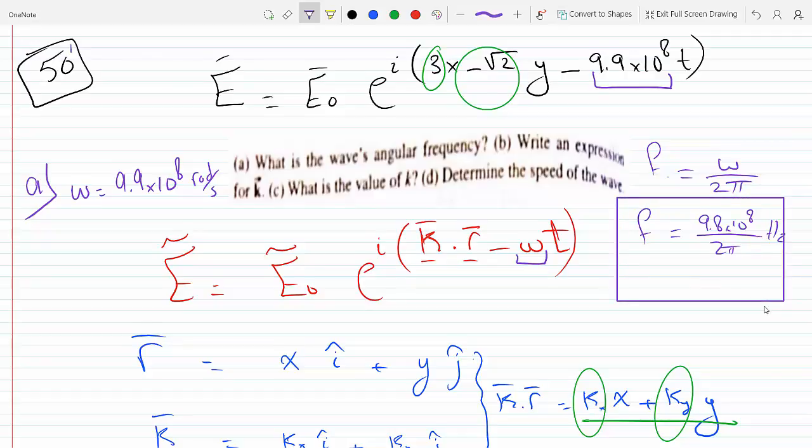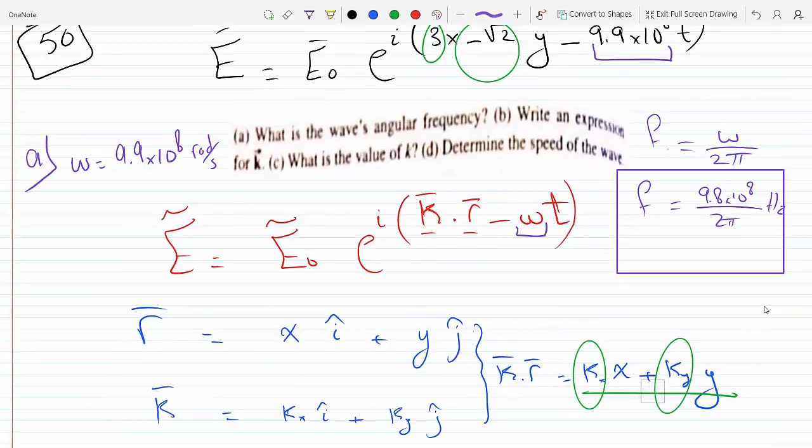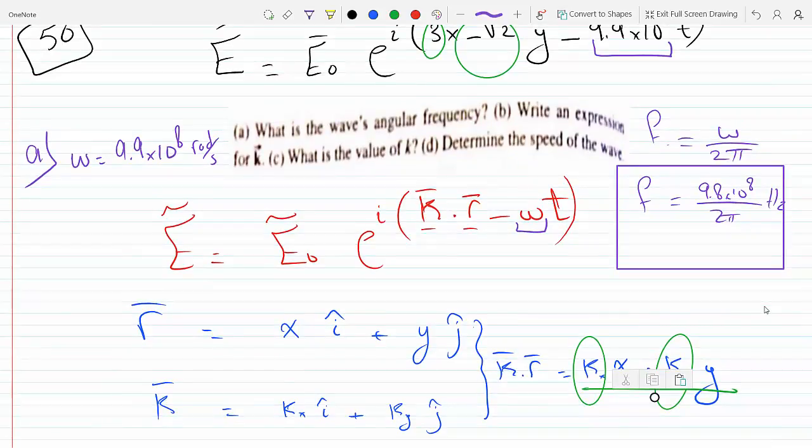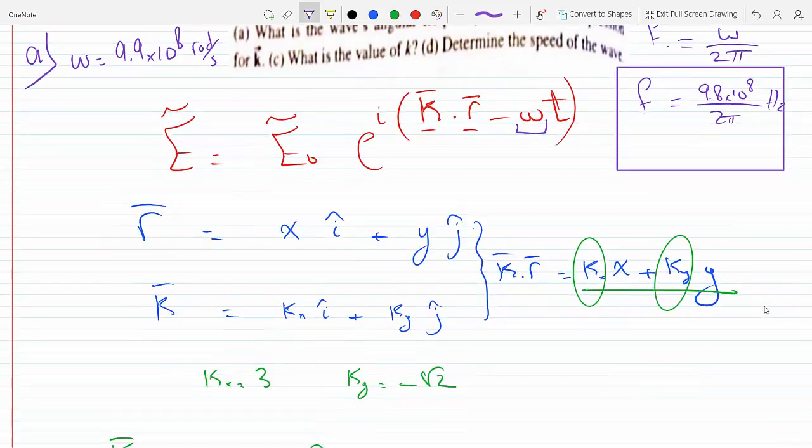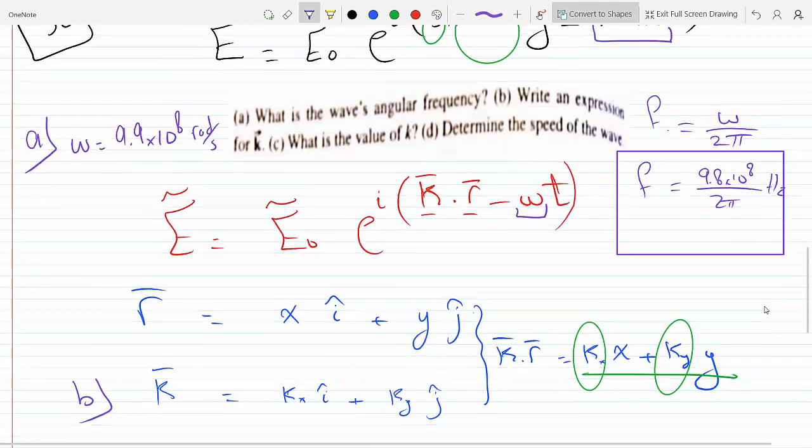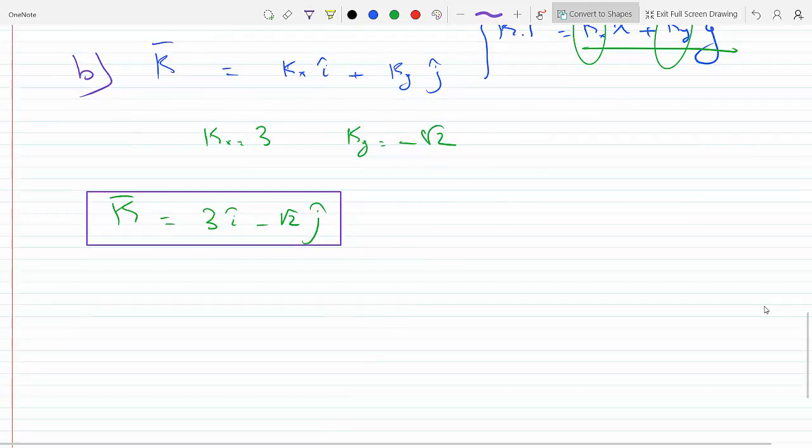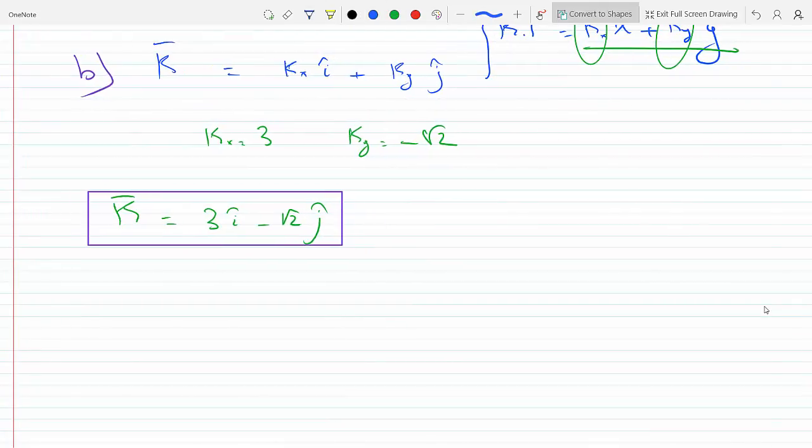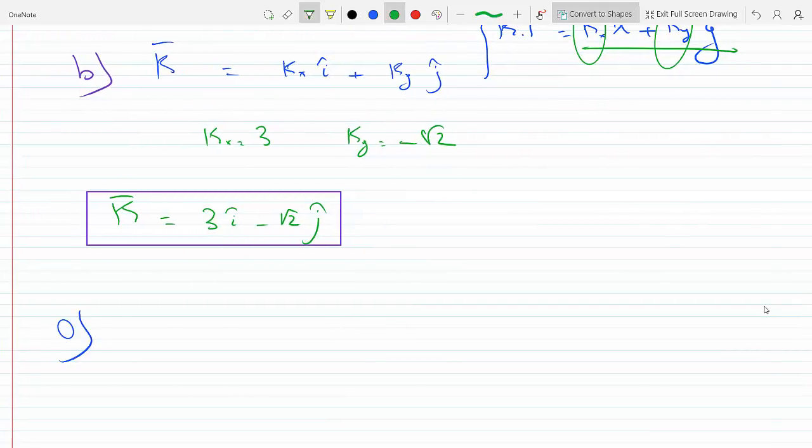Okay, now back to the question down here. Now we're looking for the value of the expression for K. So this answer is part B - this guy here is the expression for K. And for C, what's the value of K? We're gonna find the absolute value of K.